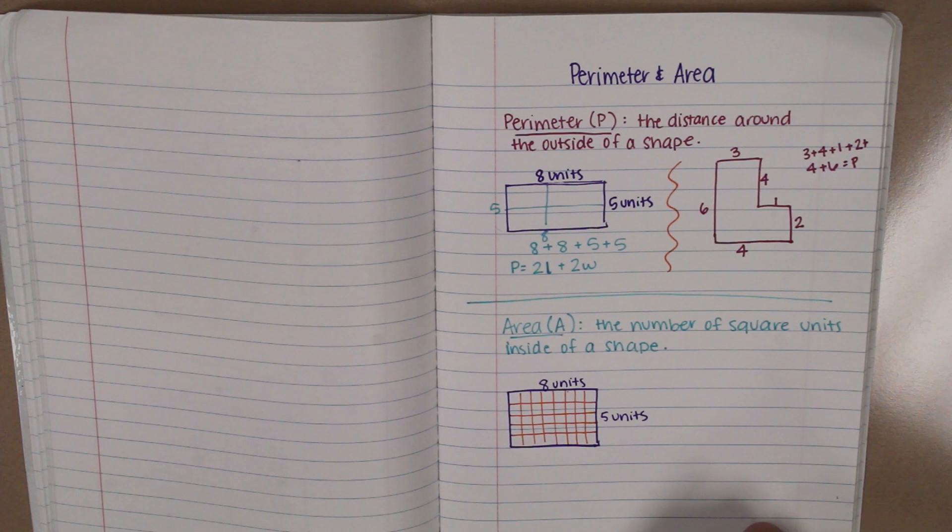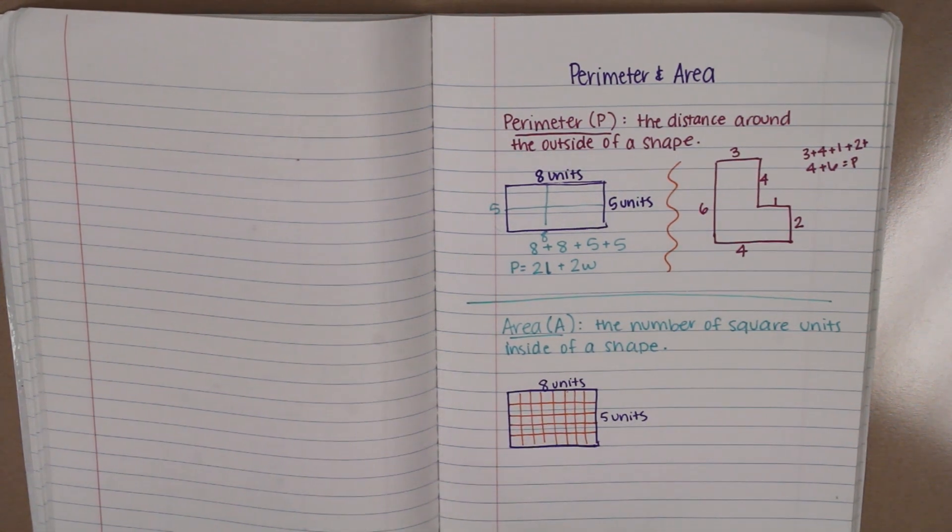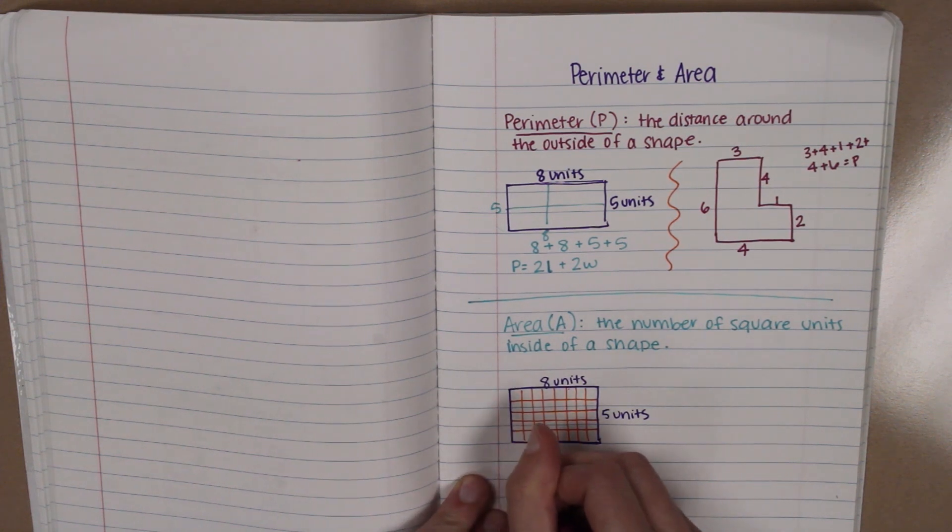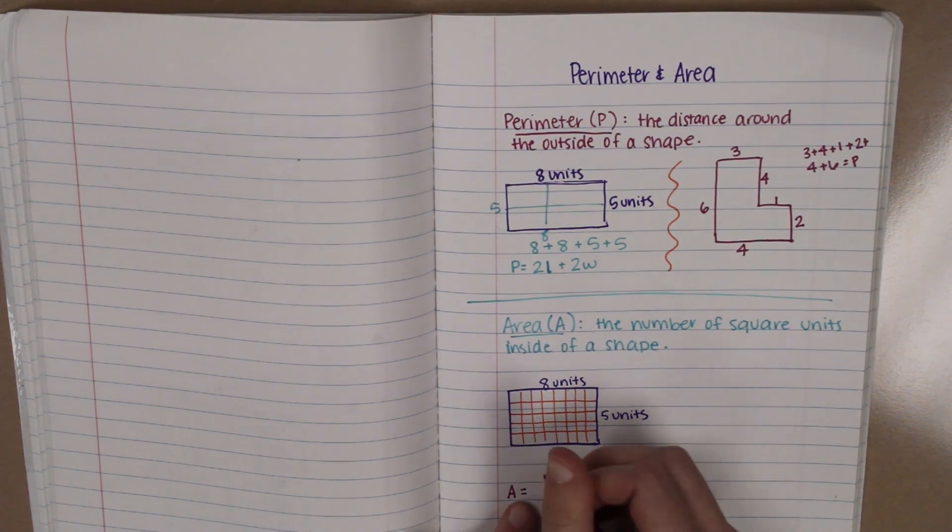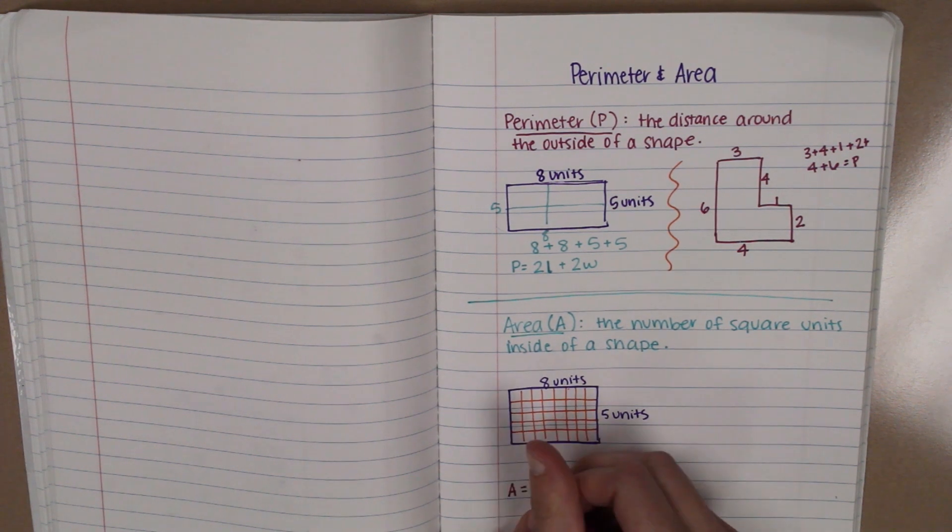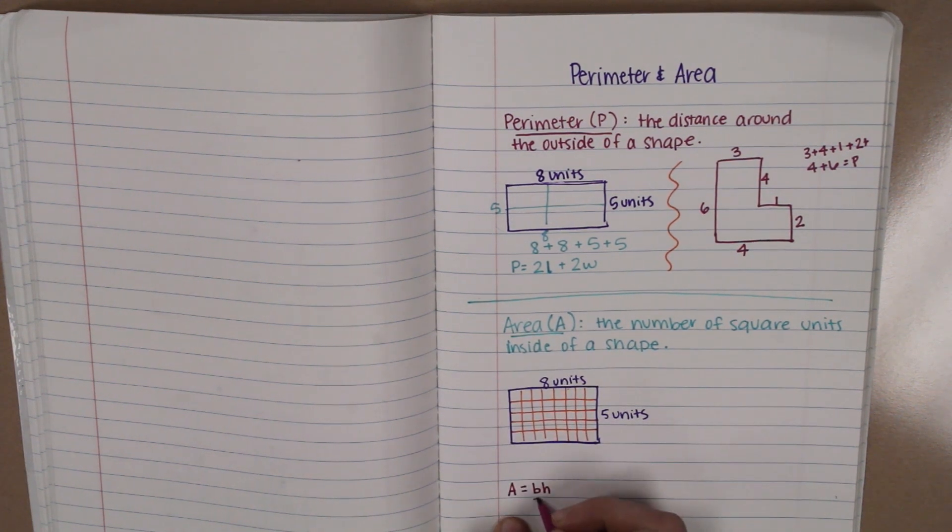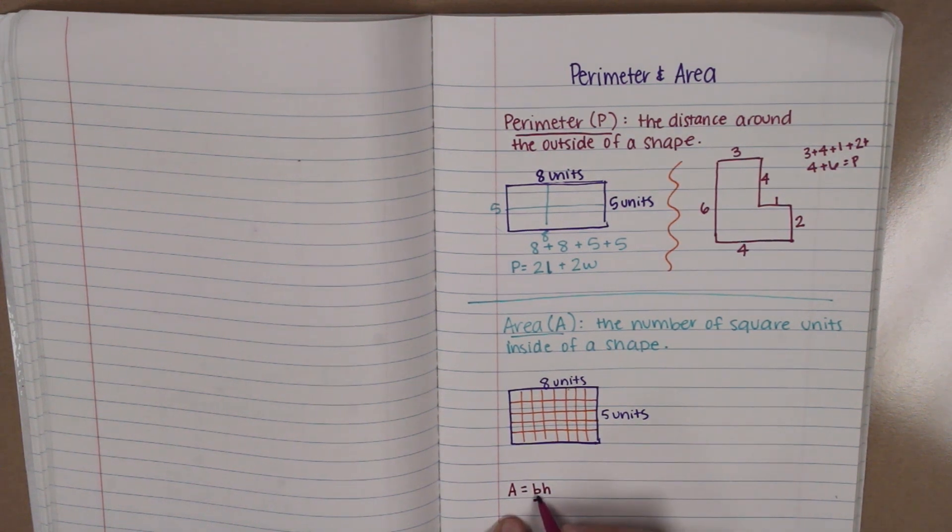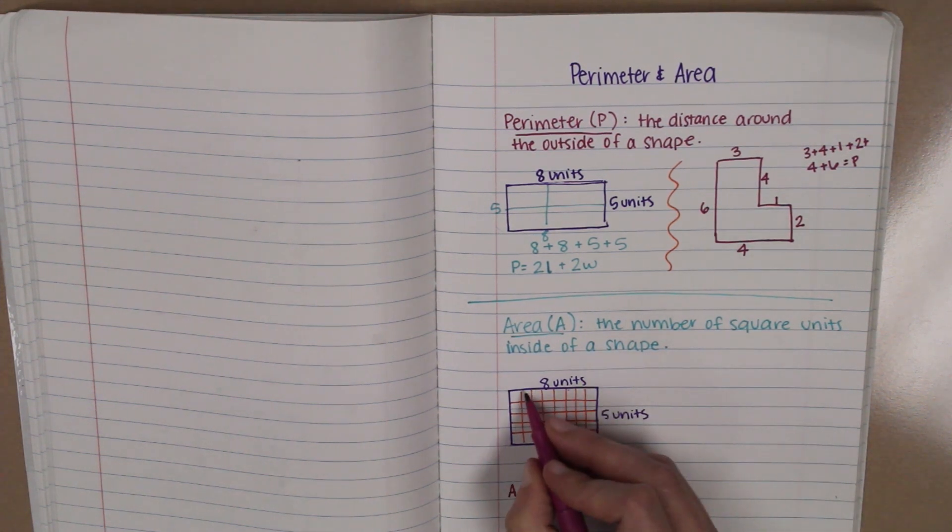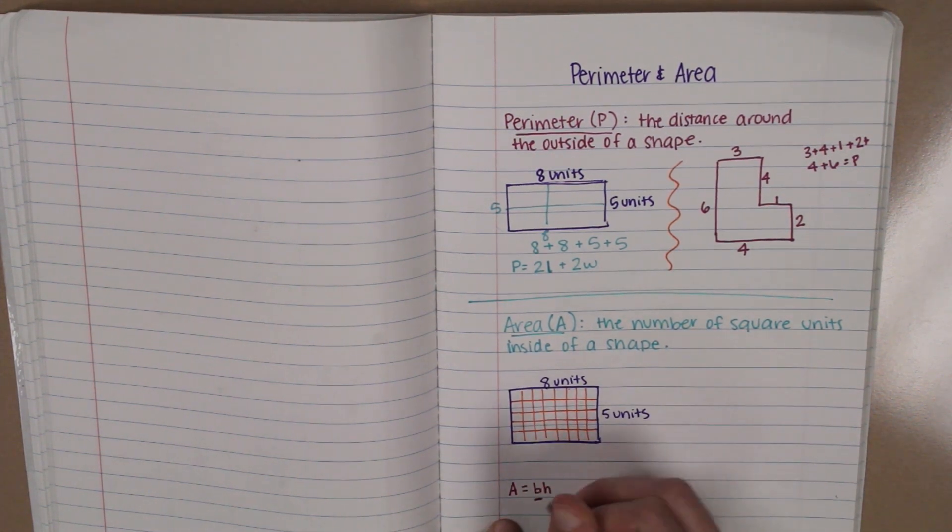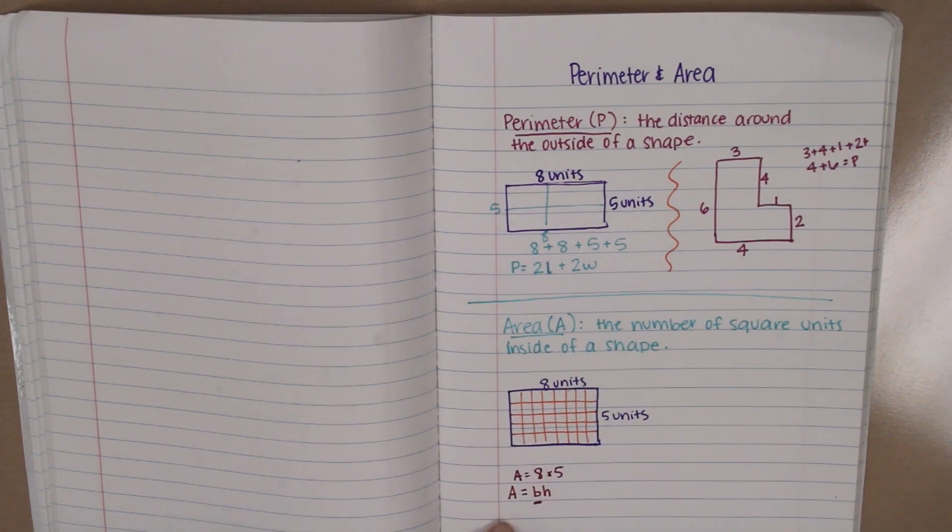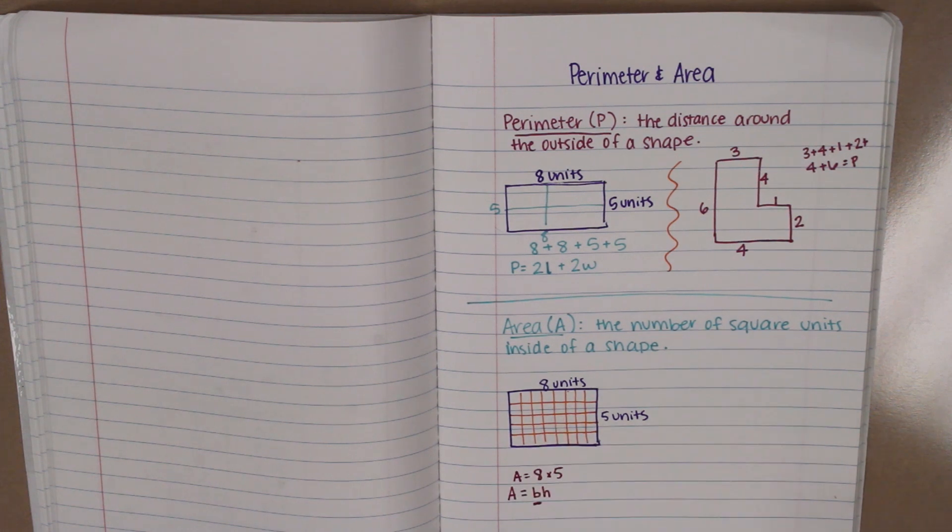like it tells you on your formula chart, that the area equals the base times the height. It's also important to note that this is a lowercase b. We're going to use uppercase B later for something else. So make sure you always use a lowercase b when you're talking about the base of a rectangle. So base times height. That would be eight times five. In this case, it gives you the same area, 40, that you would get if you counted up all the squares.